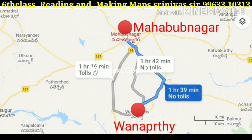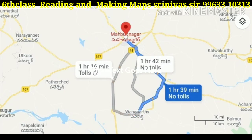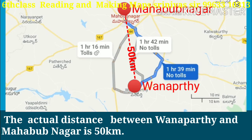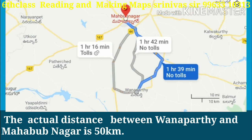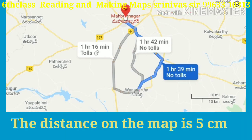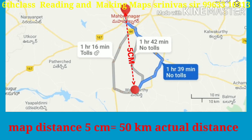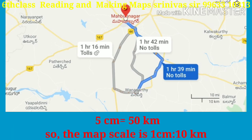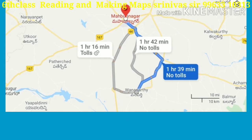For example, in a sketch map between Mahbubnagar and Wanaparthy, the actual distance is 50 kilometers and the distance on the map is 5 centimeters. So 5 centimeters represents 50 kilometers. As per this simple statement scale, if we measure one centimeter as the distance between two places on the map, the real distance on the ground is 10 kilometers.